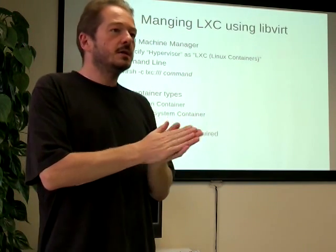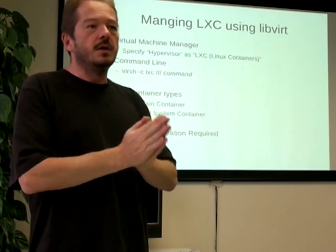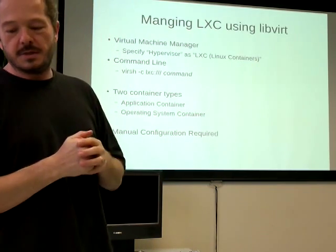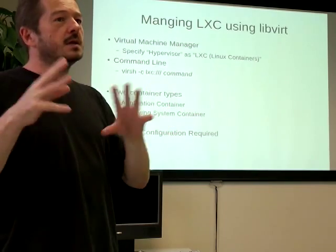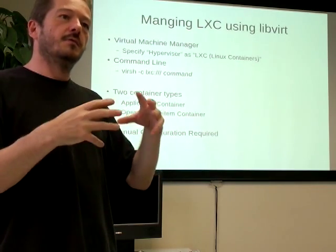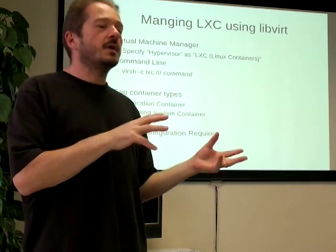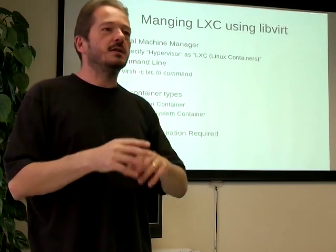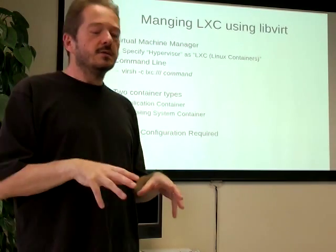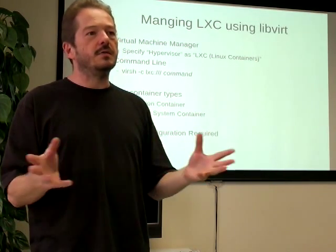There are two container types you can specify. One is an application container where you just say this application I want you to run, allocate this much memory and CPU to it — but it doesn't give you a full file system, and you'd have to configure the network adapter separately. For the cases I'm interested in, that's not useful. It's building a whole operating system container. The downside with using LXC over just creating KVM is that you've got to do some manual work — it has to be done from the command line.